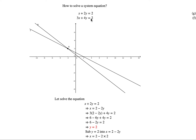When we solve a system of equations, it means we're looking for x and y. This is the same as finding where the straight line x plus 2y equal to 2 and the other straight line 3x plus 4y equal to 2 intersect. So we're looking for x and y, which is the intersection of the two straight lines — point A here.